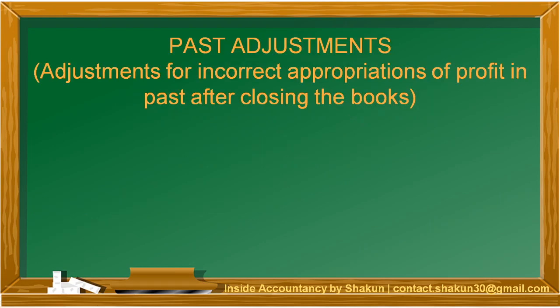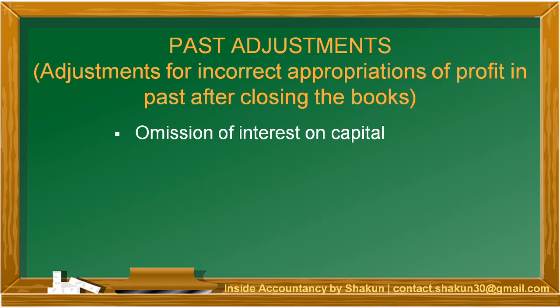Past adjustments are the adjustments for incorrect appropriations of profit in the past after the closing of the books. Sometimes, after we close the accounts of partnership, it comes to notice that there are certain errors or omissions which have not been given effect. For example, omission of interest on capital — interest on capital may be mentioned in the partnership deed but has not been provided in the books of accounts, has not been credited to the partners.